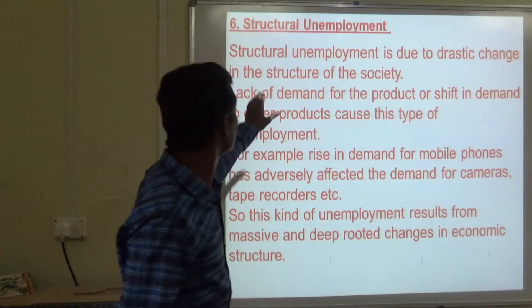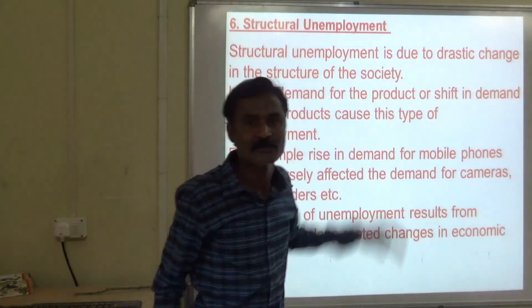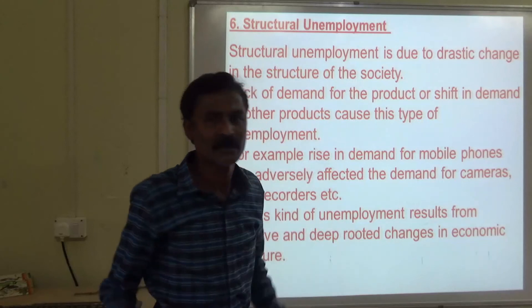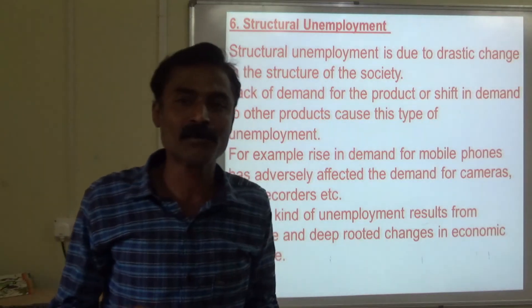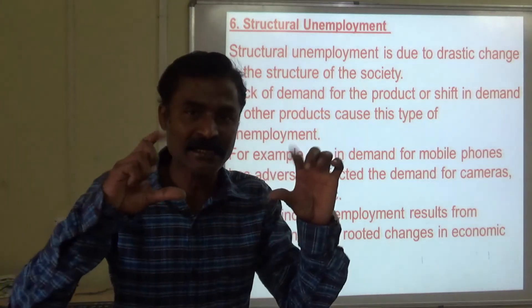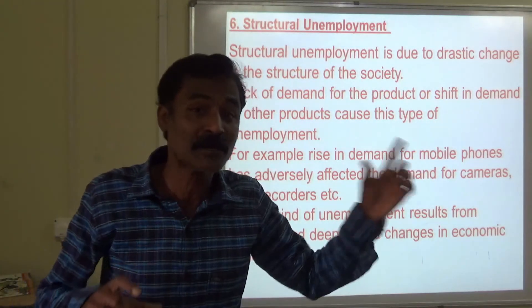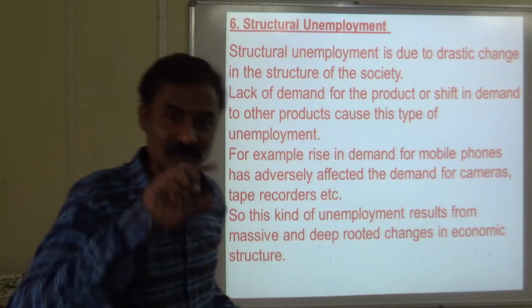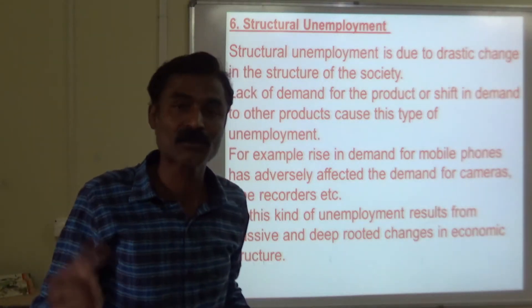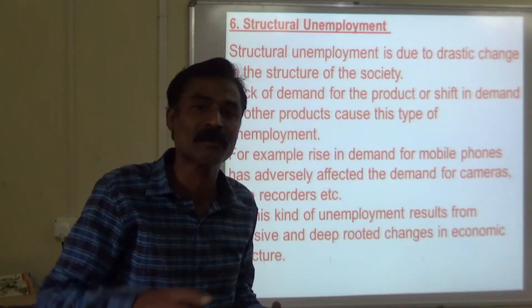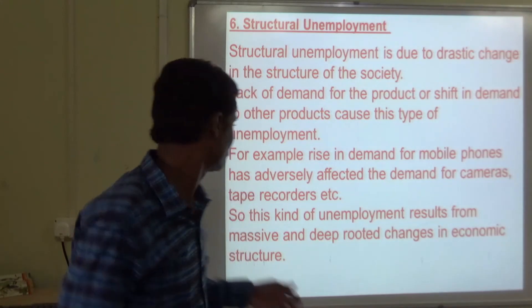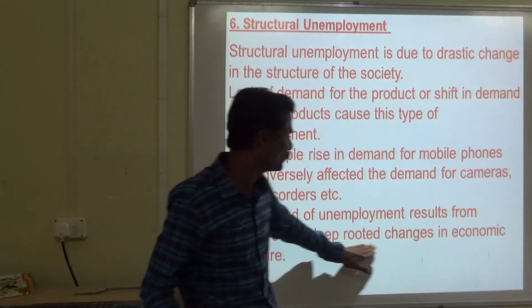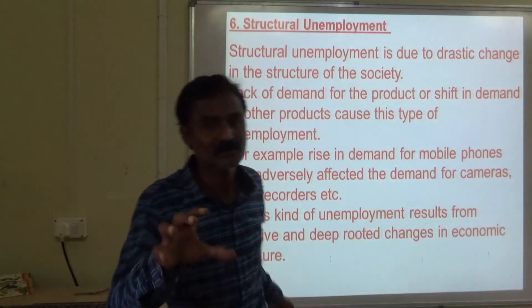Structural unemployment is due to drastic change in the structure of the economy — a lapse of demand or shift in demand for a product. For example, nowadays people do not buy cameras because cameras have been replaced by mobile phones. CD players and DVD players are being replaced by pen drives. This kind of unemployment results from massive, deep-rooted changes in economic structure.